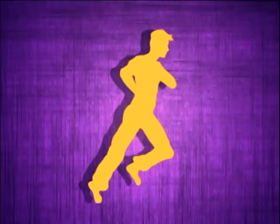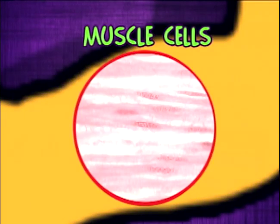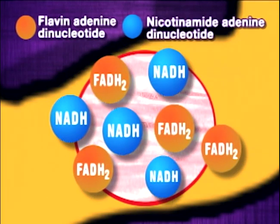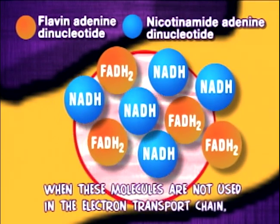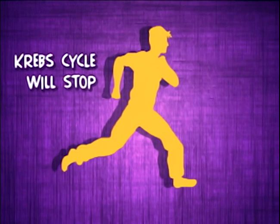When you force your muscles to exert energy so fast that your respiratory system cannot provide enough oxygen, there will be a buildup of NADH and FADH2 in your muscle cells. When these molecules are not used in the electron transfer chain, the Krebs cycle will stop.